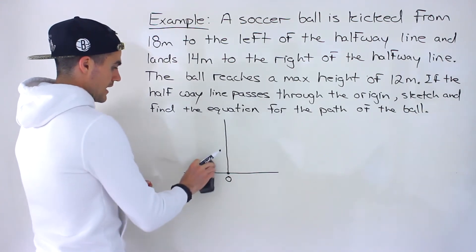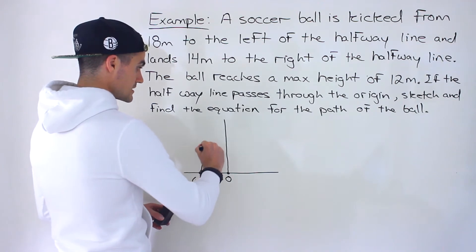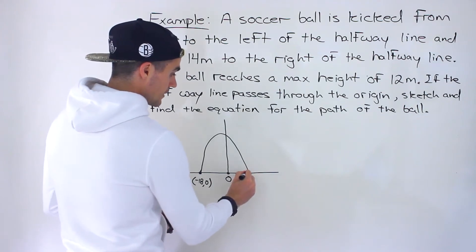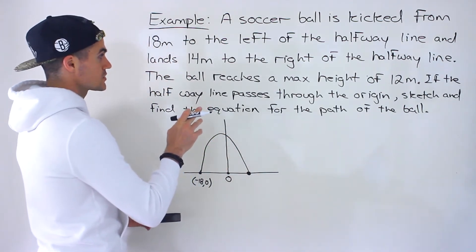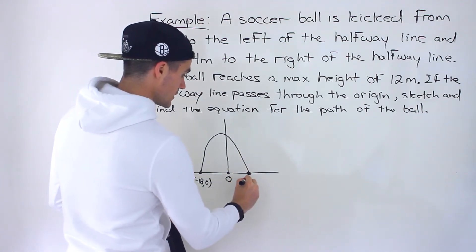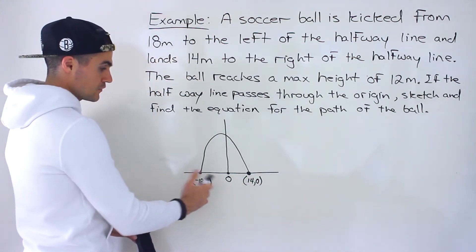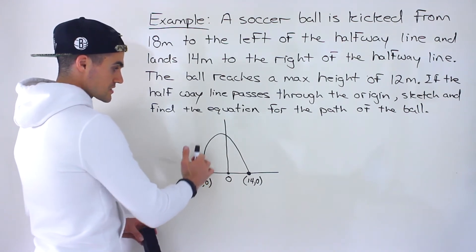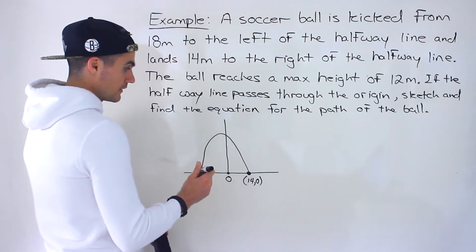This soccer ball is kicked and then it comes back down like that. And then where it lands is 14 meters to the right of the halfway line, so that's going to be right there. So it's kicked from 18 meters to the left, goes up, and then it lands 14 meters to the right of the halfway line.